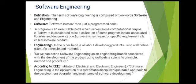First of all, what is software? It is more than just a program code. A program is an executable code which serves some computational purpose. Software is considered to be a collection of executable programming code, associated libraries, and documentation. Software made for a specific requirement is known as a software product.